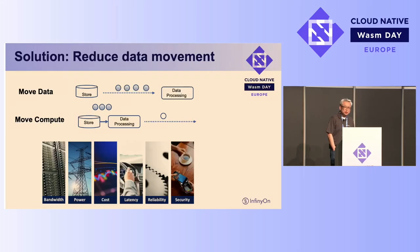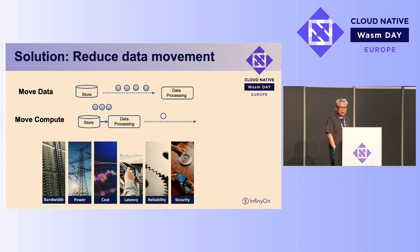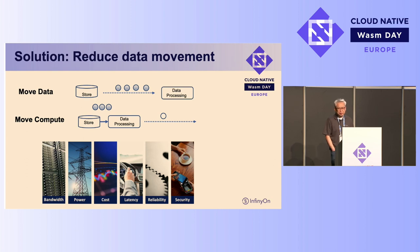So how do we solve this problem? The solution is to actually reduce the data movement. Instead of moving the data, we reduce data by moving compute as close to the store or source of data as possible. We leverage powerful compute to reduce the data as small as possible. With computers getting faster while networks are not getting that much faster, by doing this we save bandwidth and reduce latency. At the same time, we save cost and increase reliability. And since the data is so small, it's much easier to audit and enforce security policies.